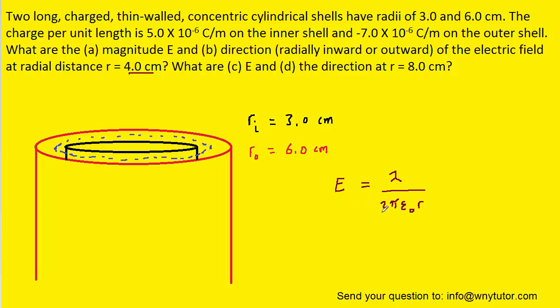So when we apply this formula, we only have to use the linear charge density of the charge that's actually enclosed by the Gaussian surface. In that case, it would be the charge present on the inner cylindrical shell. So we can calculate the electric field by only using the linear charge density of the inner cylindrical shell.